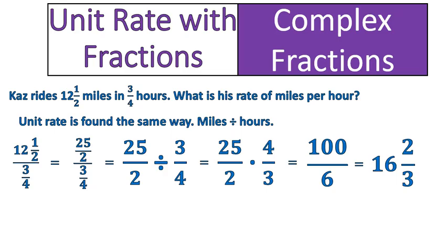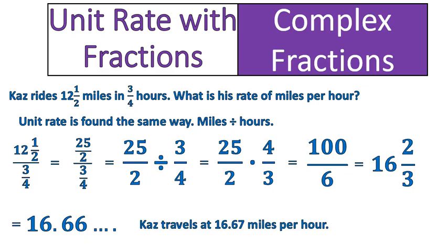At this point you need to remember quite a few rules: simplifying fractions, converting mixed numbers to improper fractions, improper fractions to mixed numbers, and that dividing fractions means multiplying by the reciprocal. I'm not covering those topics inside this lesson — we'll assume as a prerequisite that you know how to do those things. I do have videos on my channel on each of those topics. Now, 16 and 2 thirds is the same thing as 16.66 repeated, so Kaz travels at approximately 16.67 miles per hour.